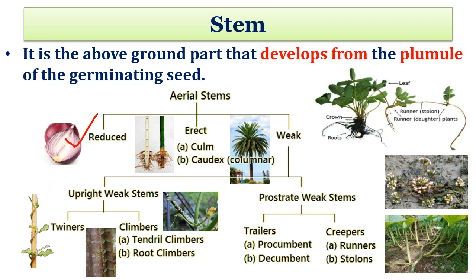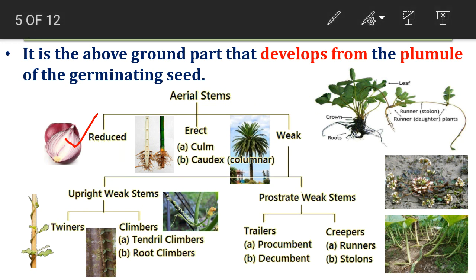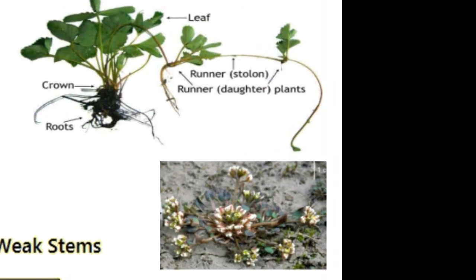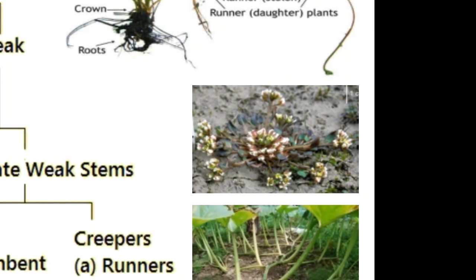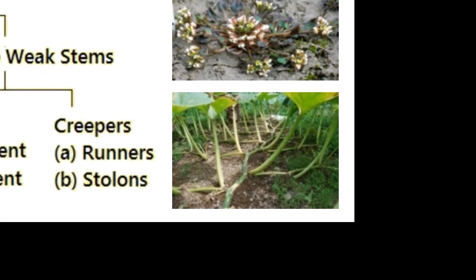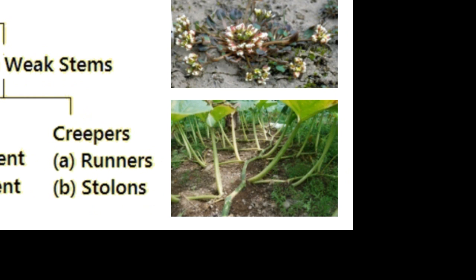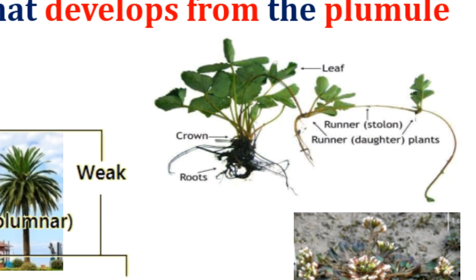Next is the procumbent type, where the stem just after emerging from the ground starts spreading. In the decumbent type, after emerging from the ground, the stem grows erect to some extent and then starts spreading. Next is the stolon — it is the connection or means of propagation for establishing new plants at some frequent distance, and the established daughter plant is called a runner.